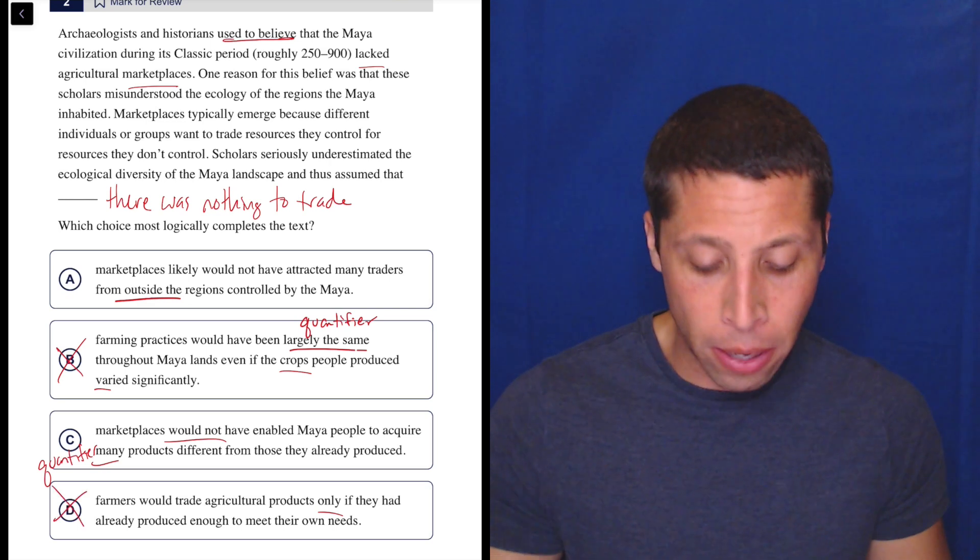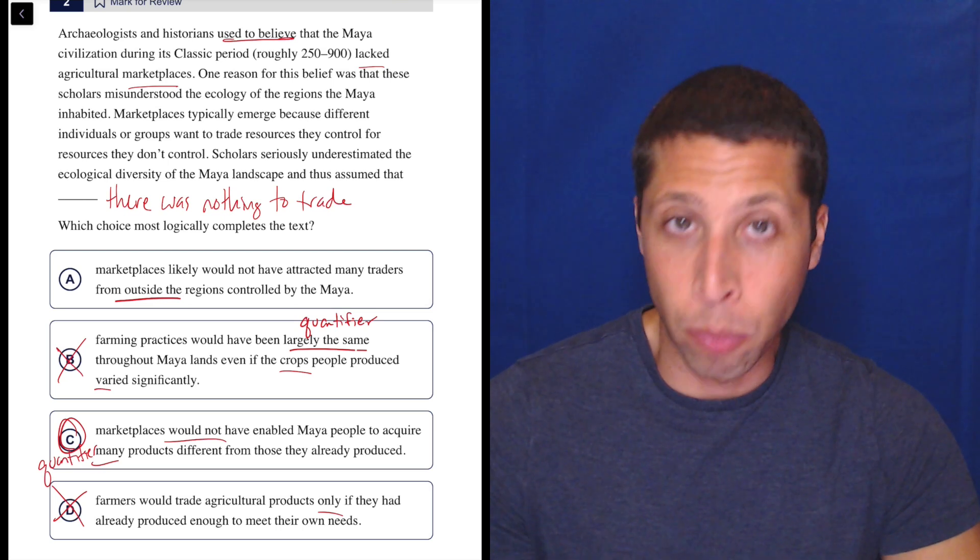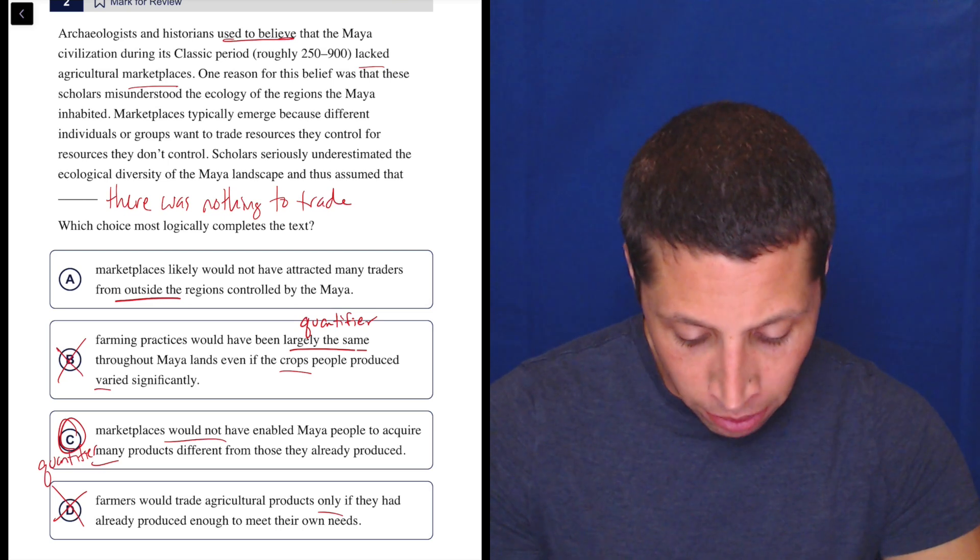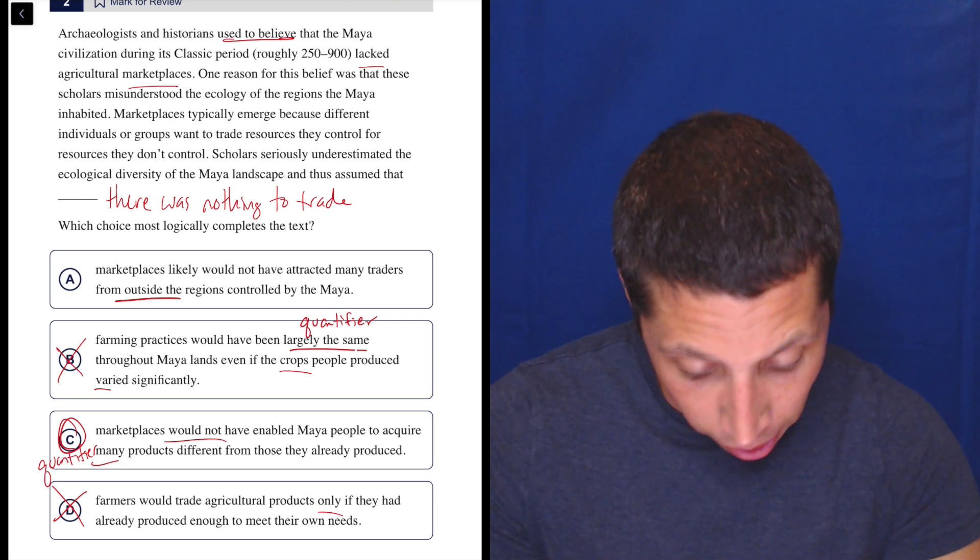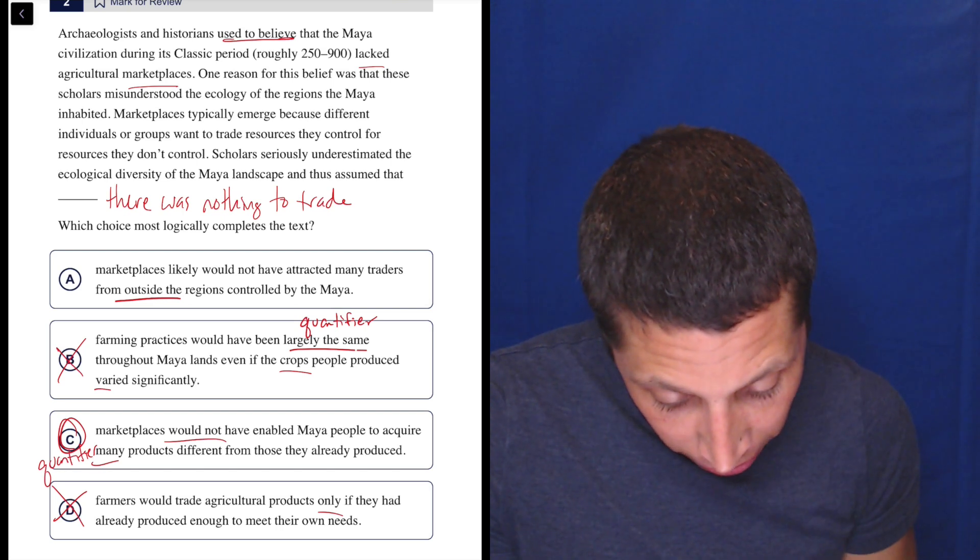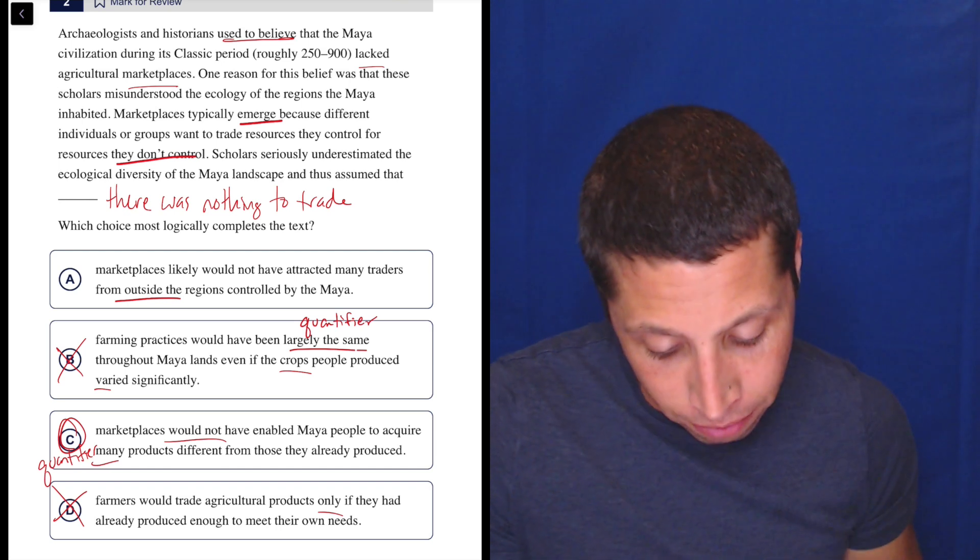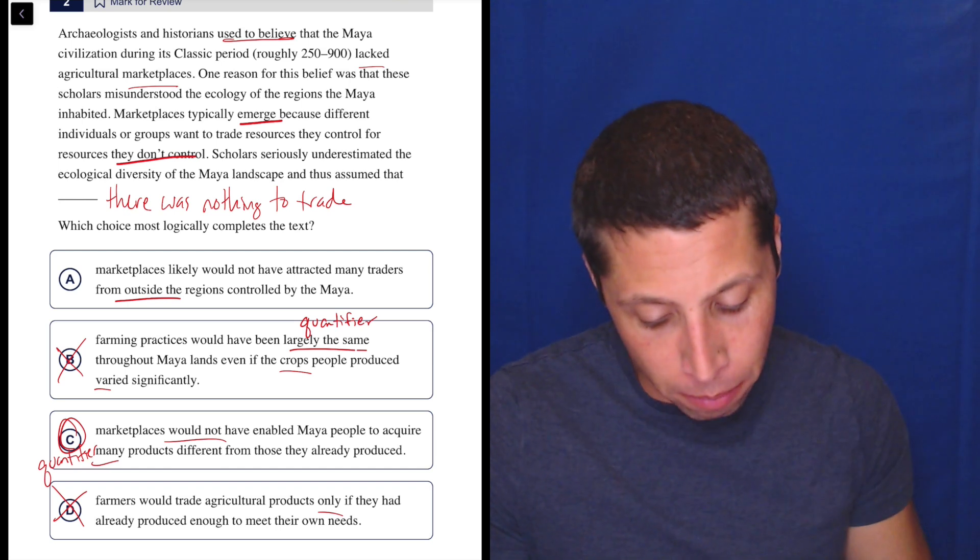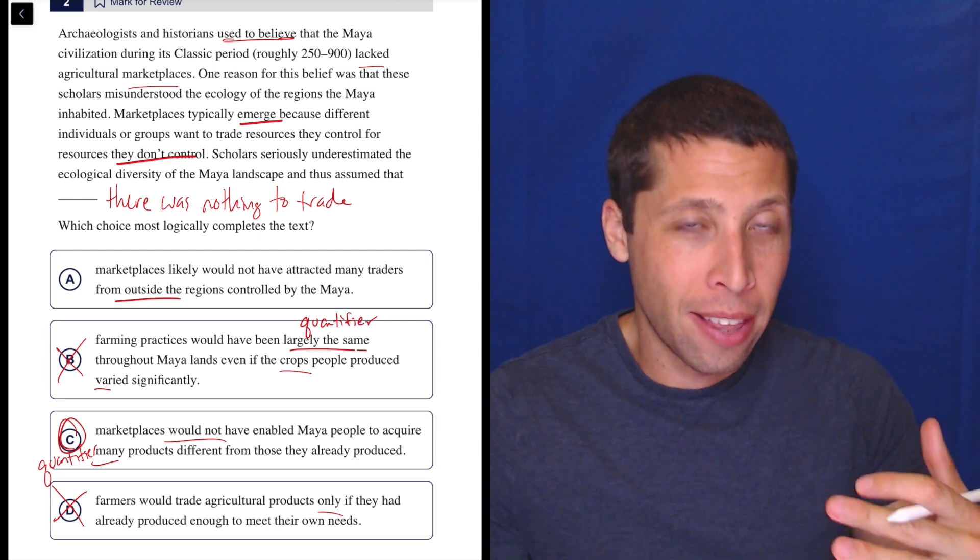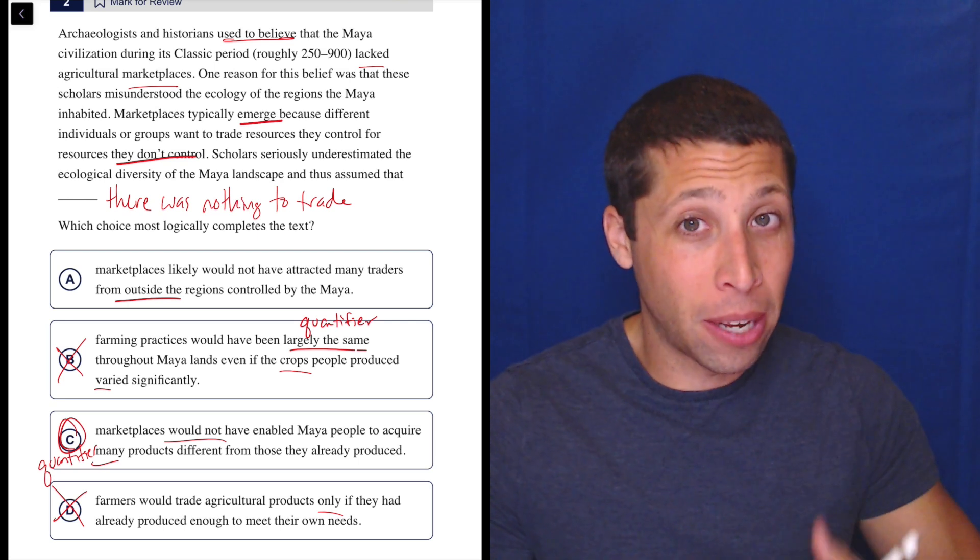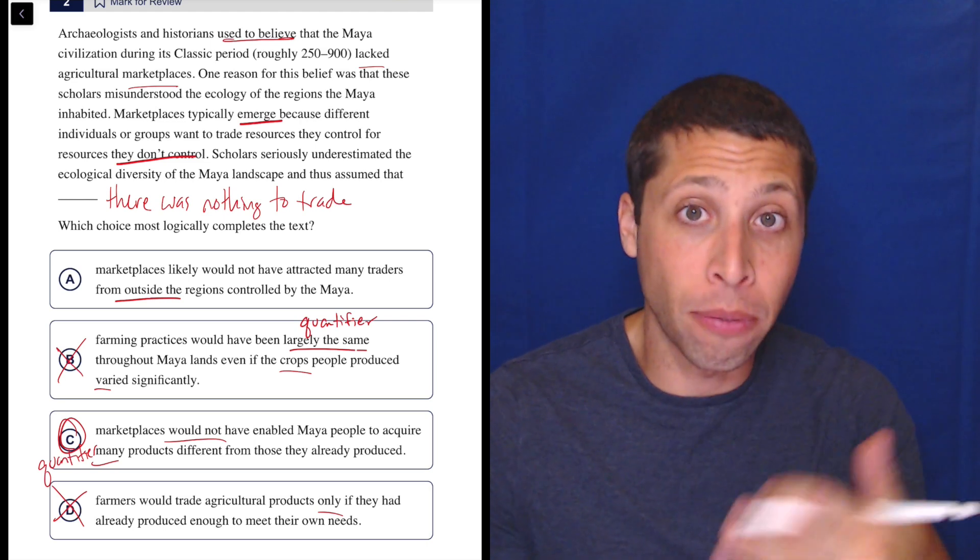So this is just not what they're talking about. I would be pretty confident here picking C without much more rereading. It is saying what we need to say - it's about the diversity of things. There's many products that are different from those they already produced. So they're saying there wouldn't have been marketplaces because they emerge because of different things wanting to trade for things that they don't have.